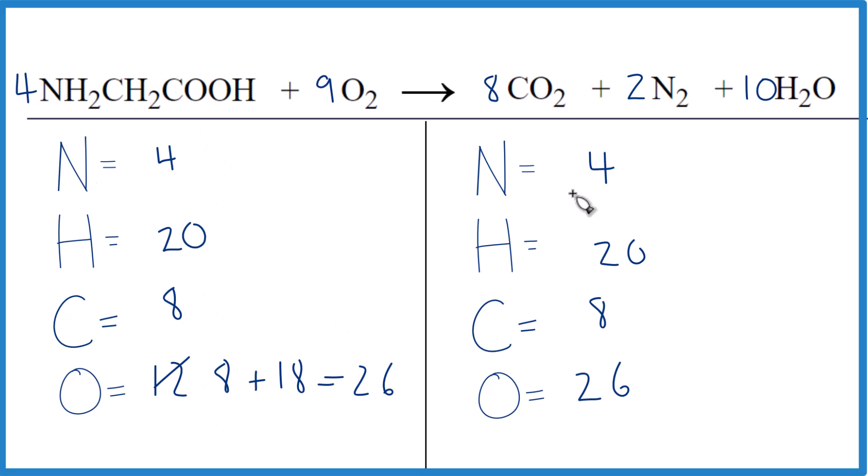And everything is the same on both sides. So like I said, this is not an easy equation to balance. Sometimes when you get that odd number and everything's getting kind of crazy, you're dealing with fractions, you can just double the coefficients and you're not really changing anything in the equation because coefficients are just ratios.